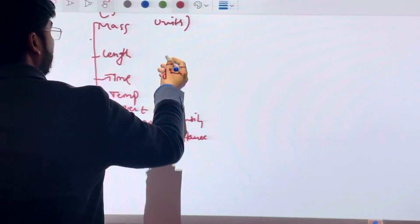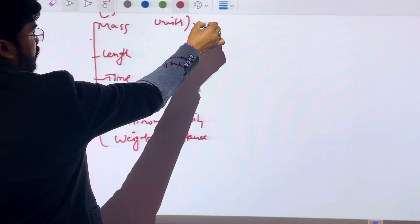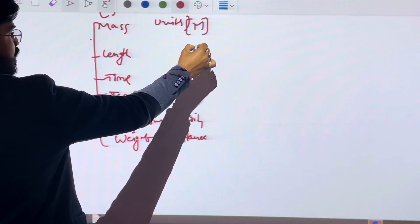These dimensions are M for mass, L for length.